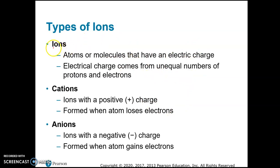Ions can form in atoms that are unstable. The ion forms in order to fill the outer electron shell. Ions are atoms that have an electric charge, and they can also be molecules with an electric charge. The reason they have a charge is that they either have more electrons than protons or fewer electrons than protons. Protons are positive and electrons are negative, so if those numbers are not equal, you'll have an excess of positive or negative charge.